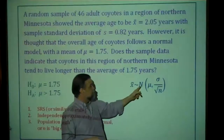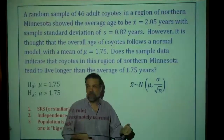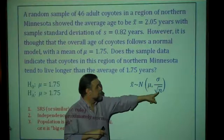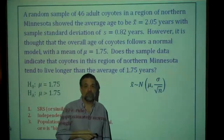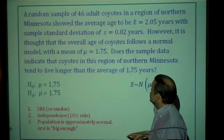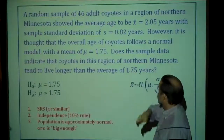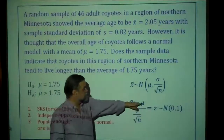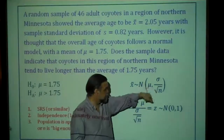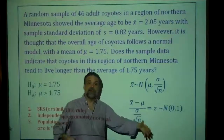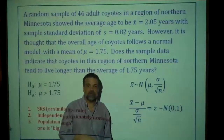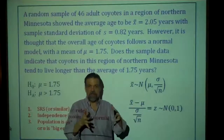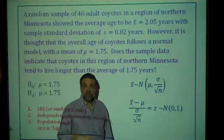If you remember, the sample mean x̄ is normally distributed with the same mean as the population but a skinnier distribution, because the standard deviation is σ divided by the square root of the sample size. So in this case that's σ divided by √46. If you take x̄, subtract μ, and divide by this standard deviation, you get z — a standard normal random variable with mean zero and standard deviation one — which we can look up in Table A.